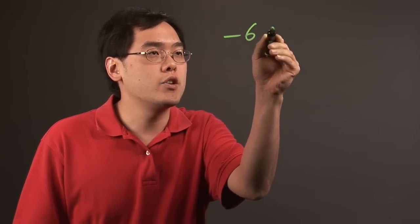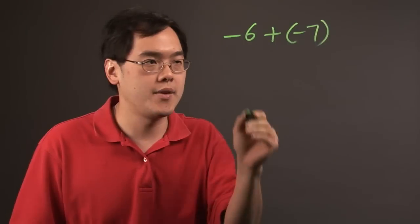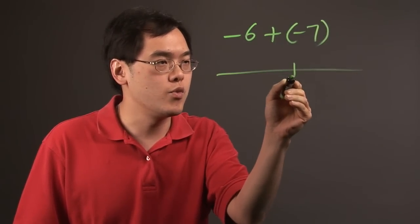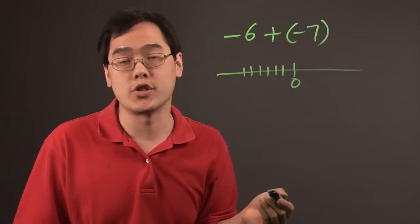First we're going to address the addition of negative numbers when you have -6 + (-7). Using a number line really helps because it gives you an idea as to where a number is going.